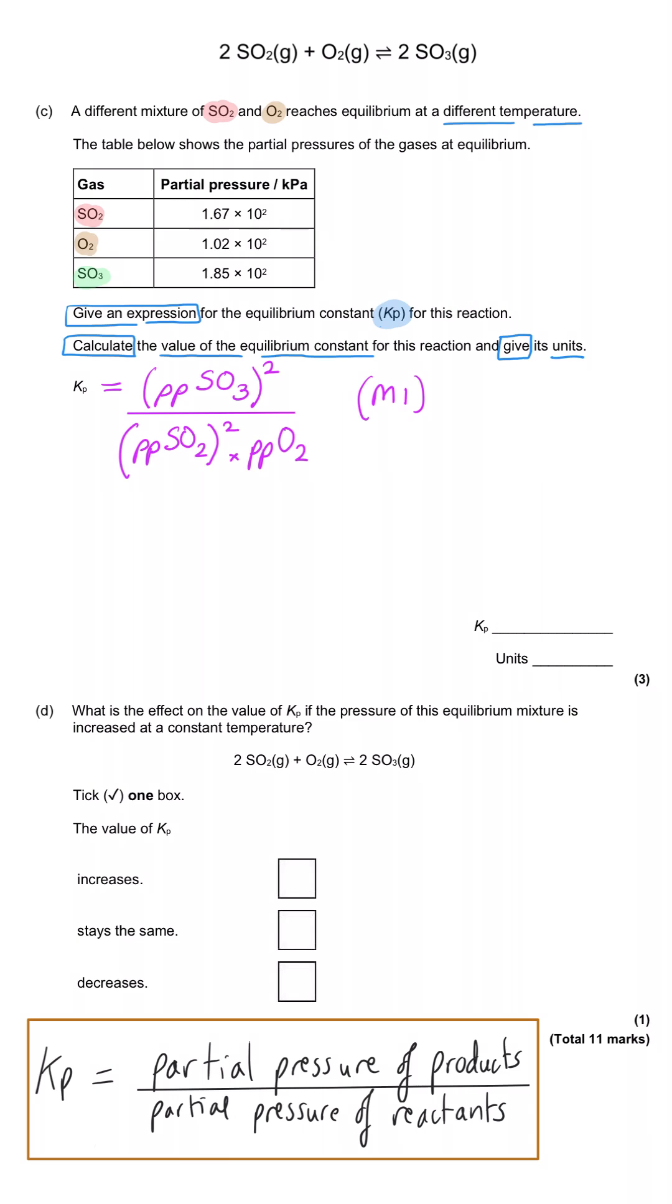Then we substitute these values in, then we run the calculations, and we get a value for Kp of 1.20 times 10 to the minus 2. 1.2, absolutely fine. No significant figures have been specified here.